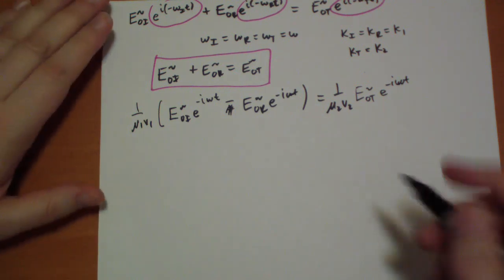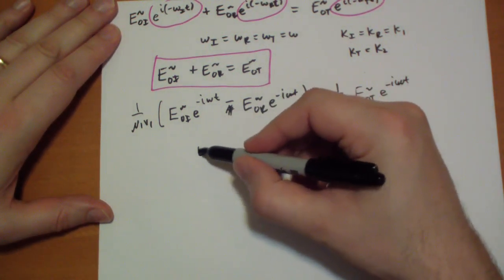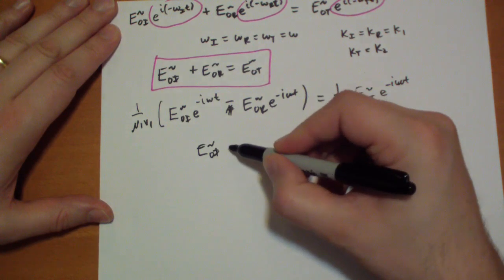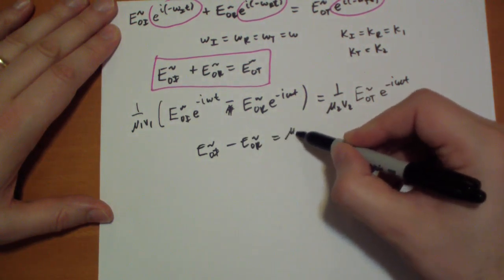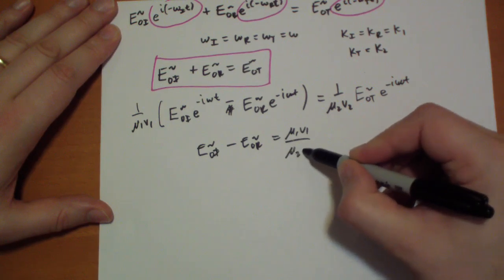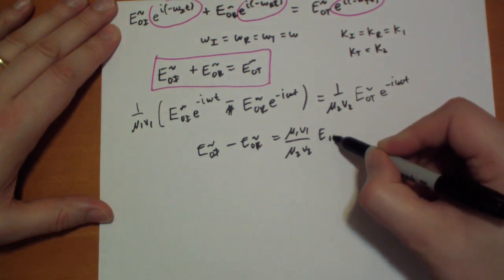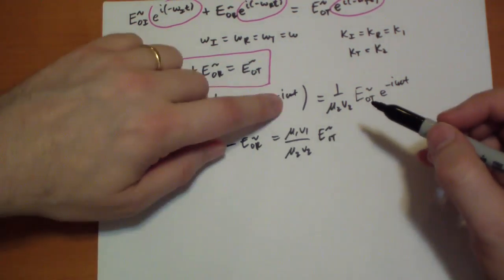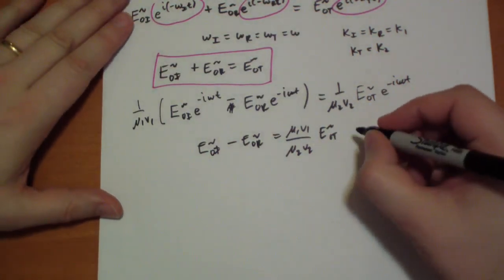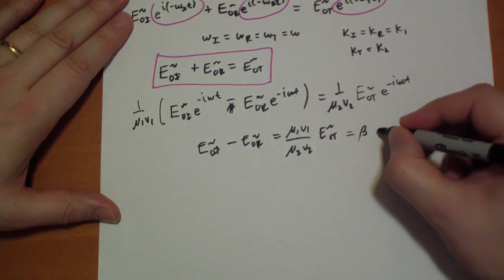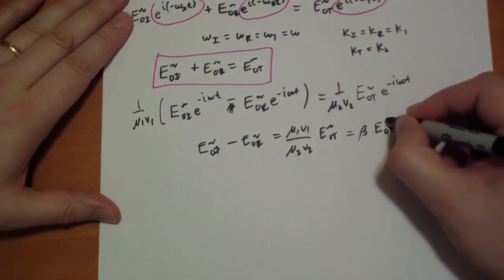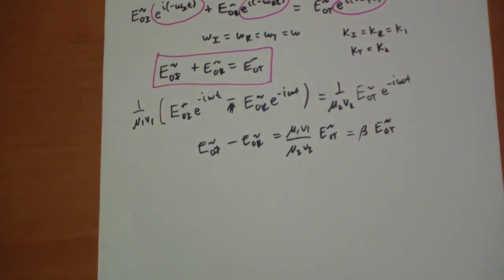So this one you simplify to say that E naught i complex minus E naught r complex is equal to mu 1 V1 over mu 2 V2 E naught t complex, because these e to the i omega t's are all going to be equal. And we're just going to rename mu 1 V1 over mu 2 V2 as beta E naught t. That's the second equation.